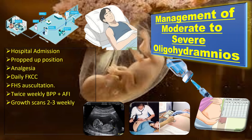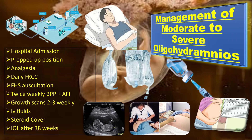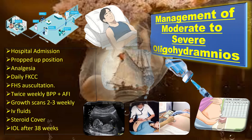IV fluids such as Ringer's lactate drip — one liter — are given IV once daily or twice daily. We apply the rule of steroid cover for fetal lung maturity. After 38 weeks of gestation, we should consider induction of labor.